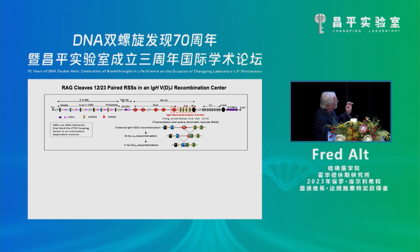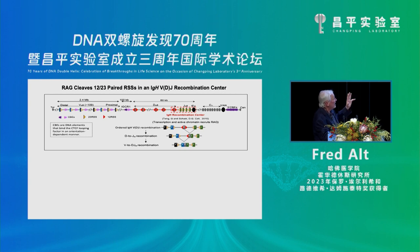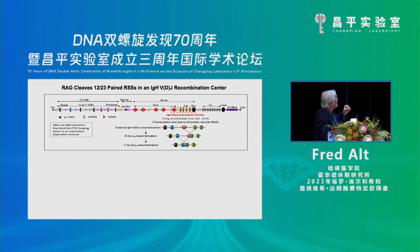David Schatz and others found that the immunoglobulin heavy chain J segments — four of them downstream — serve as a recombination center where the RAG endonuclease binds and carries out the whole reaction from that site in the genome. The J segments have 23 RSSs pointing upstream, D segments have 12 pointing downstream, and Ds join Js first. That leaves the DJ with another 12 RSS. Upstream, hundreds of V segments point at the RSS of the J. Everything that gets joined is convergent — that's an important point.